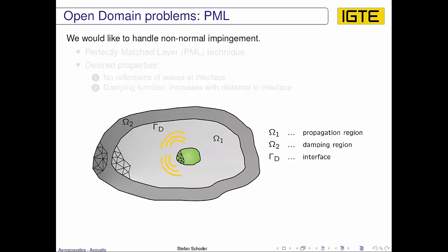Welcome to this video about open domain problems, and here we are talking about the PML. The first idea was that we would like to handle non-normal impingement of the waves and also not having this first-order representative of the characteristics. So this is the idea of the perfectly matched layer technique, and the desired properties are: